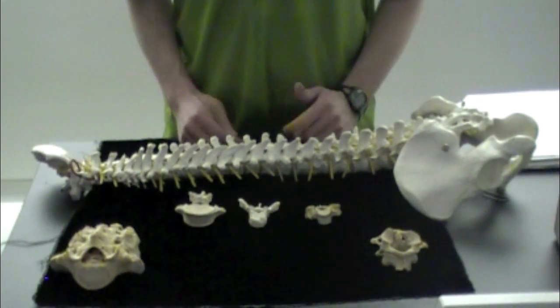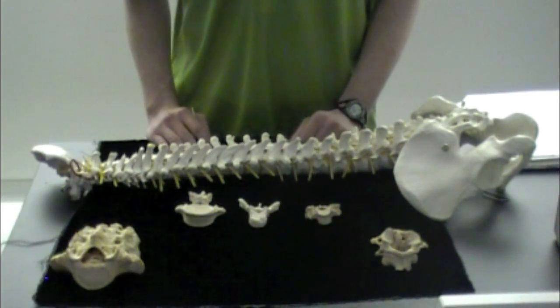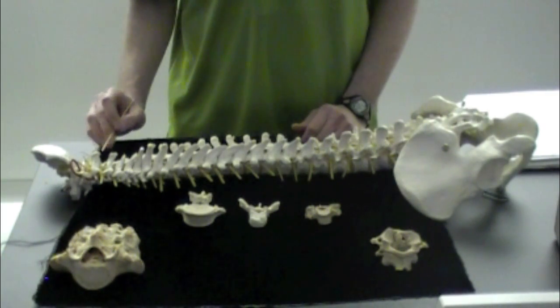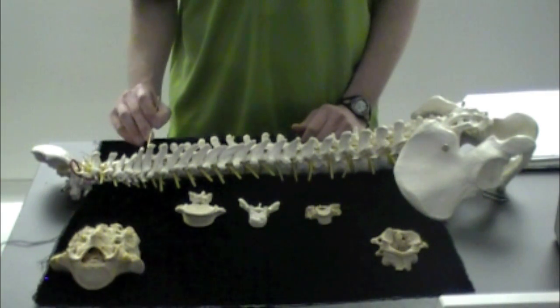Alright, we're going to be going over all the structures on the spine here. Just to start off, I'm going to count off all the vertebrae that you have. You have 7 cervical vertebrae, so 1, 2, 3, 4, 5, 6, 7.